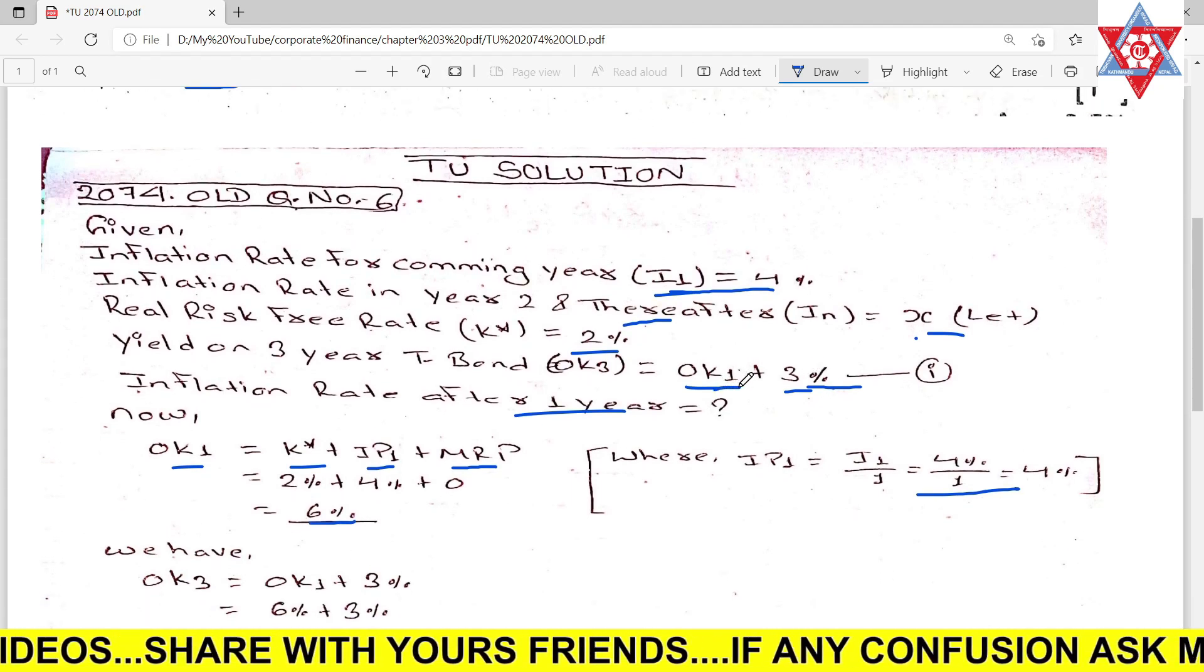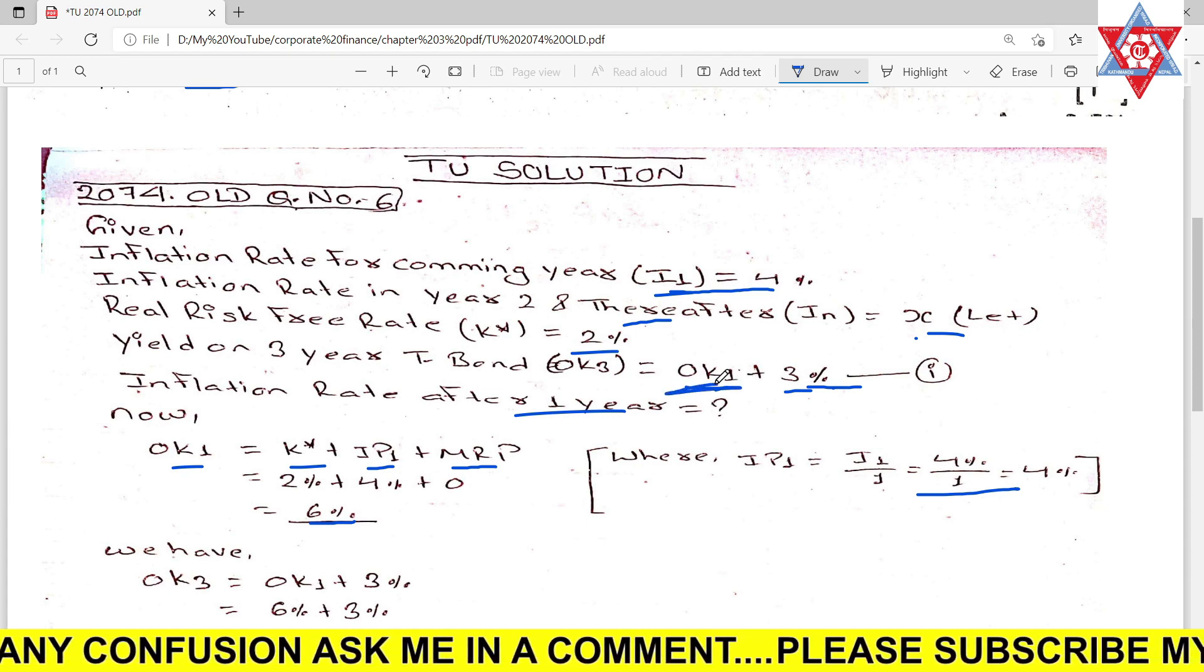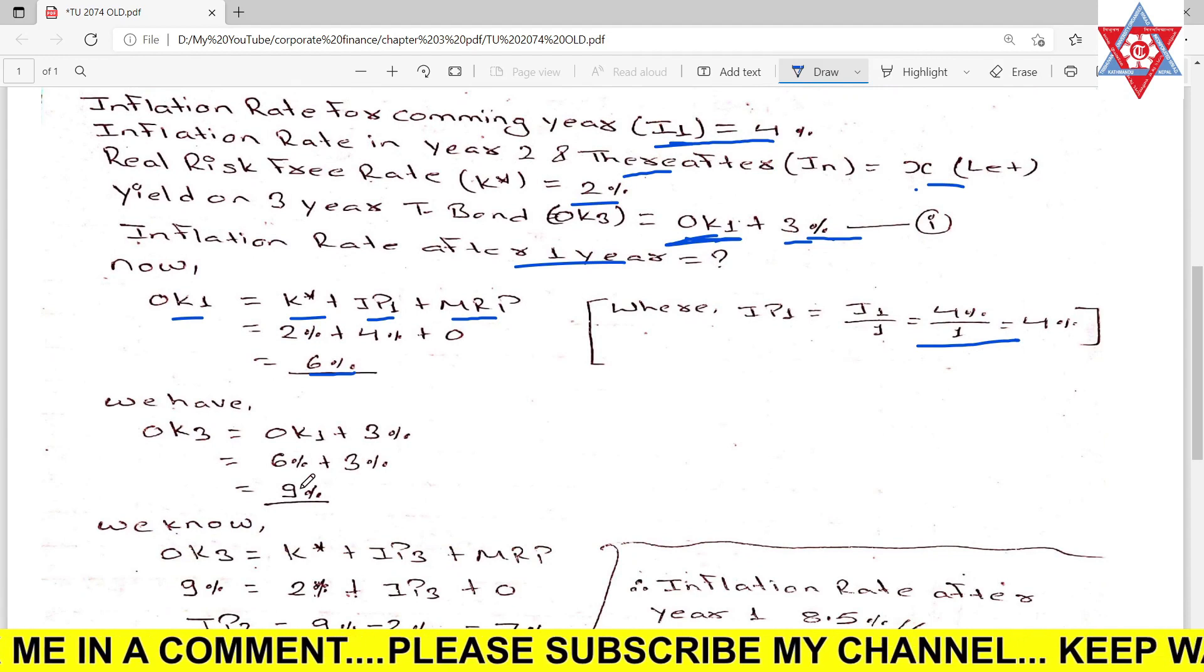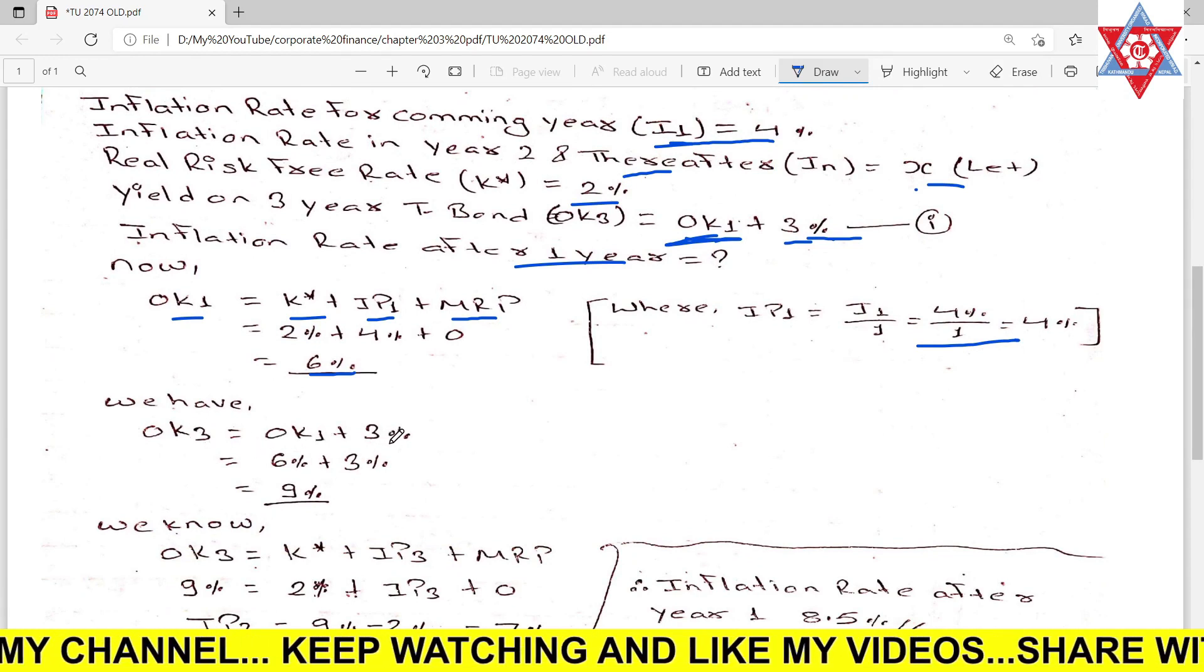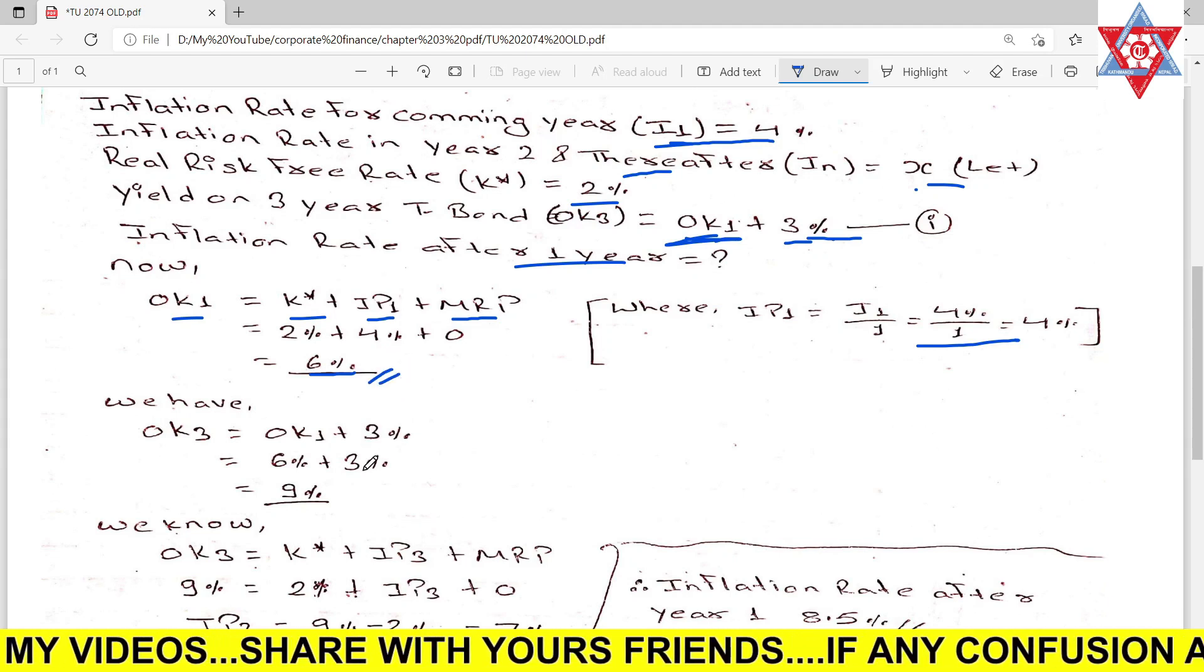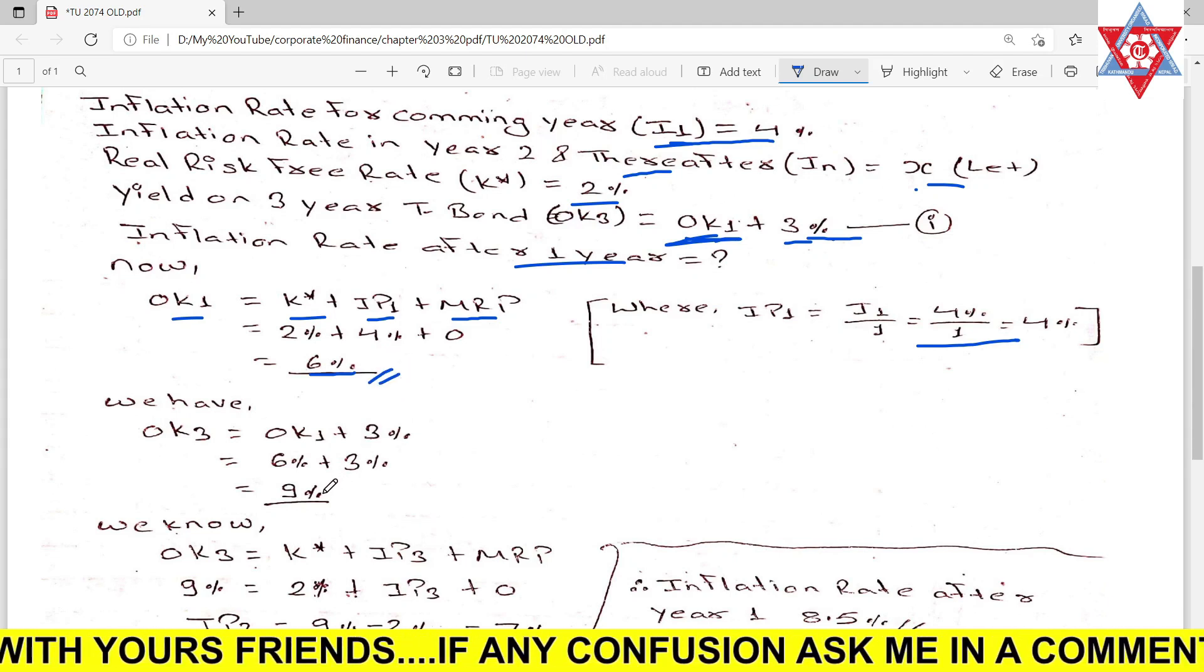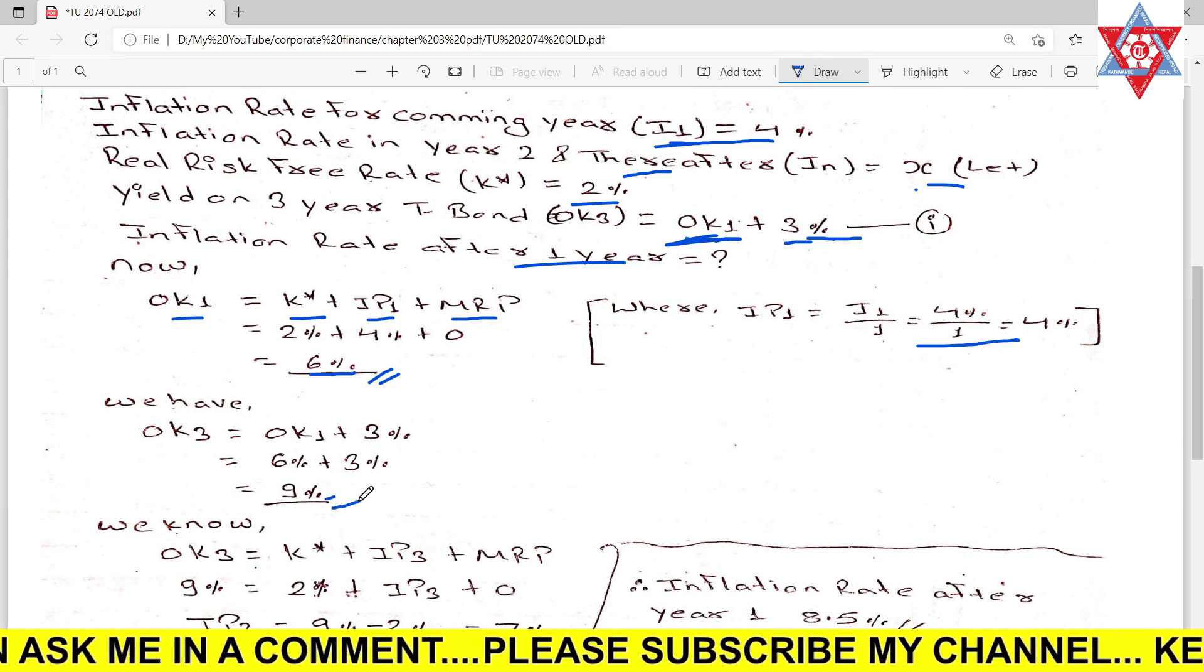Zero K₁ equals zero K₃ minus three percent. Zero K₁ is six percent, so the three year interest rate on treasury bonds is nine percent.